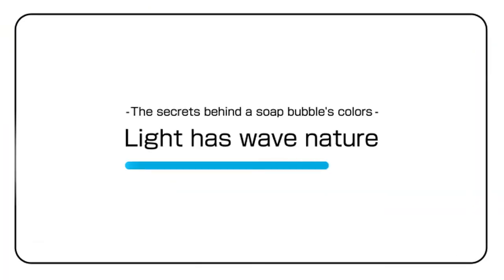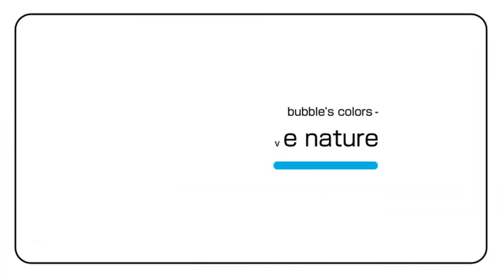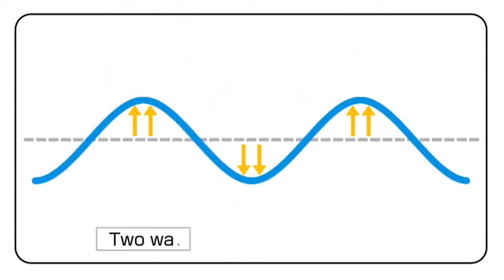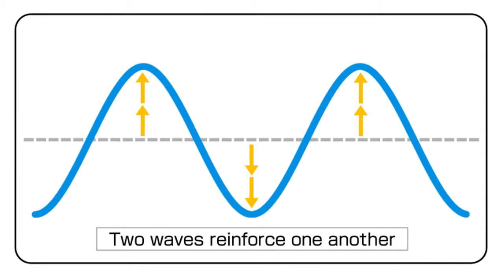The secret lies in the wave nature of light. When two sets of waves move in the same direction with the same wavelength, the peaks line up with peaks and the troughs with the troughs to create a single larger and stronger set of waves.